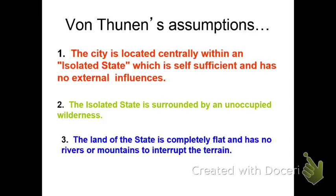Von Thunen created this model, and it's pretty simple. You just have to remember a few rather basic assumptions that Von Thunen came up with. Number one, the city is located within the center of an isolated state. By isolated state, he means we're not going to have a lot of influence from surrounding countries or surrounding markets — it's kind of just this lone state out there in the frontier.